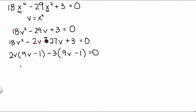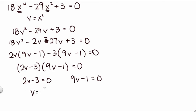So I get 2v minus 3, or multiply by 9v minus 1, is equal to 0. So we have 2v minus 3 equals 0 as our first one, and then 9v minus 1 equals 0. And when we add 3 and divide by 2, I get v equals 3 halves for this one, and then v equals 1 9th for this one.